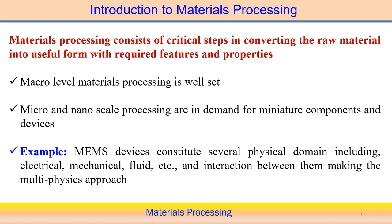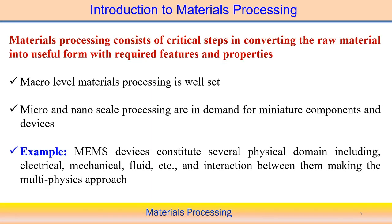Material processing can be at different scales. At the macro level there are many manufacturing processes, and the field is still evolving with changes in existing methodologies. Nowadays the application of miniature components is gradually evolving, so macro, micro, and nano scale processing are in high demand. It is not simply a reduction of scale from macro level manufacturing — there are many issues associated with trying to reduce scale from macro to nano that must be addressed.